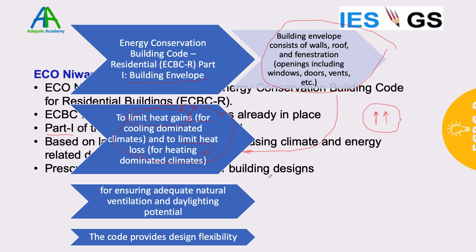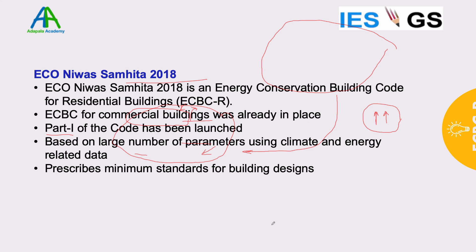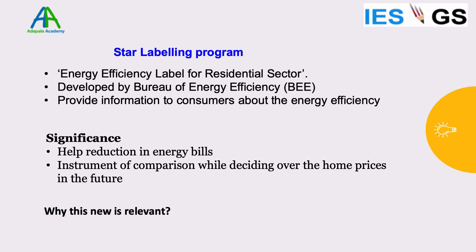This building code gives envelope design standards. Apart from limiting heat gain and heat loss, it also ensures natural ventilation and daylighting, reducing energy required for fans and lights. The code also provides design flexibility, making it helpful for designers and architects building new residential buildings, apartments, and townships. Following this news, a star labeling program developed by the Bureau of Energy Efficiency was introduced for residential buildings, giving star certifications based on energy savings achieved, helping consumers choose more energy-efficient homes and promoting ethical consumerism.